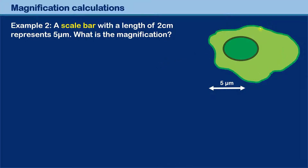On the right side you can see a cell with a nucleus in the middle. This arrow here is referred to as a scale bar. I'm going to show you how to do calculations using scale bars. The question is: a scale bar with a length of two centimeters on paper represents five micrometers — what's the magnification? We're not looking at the cell itself, just the scale bar.